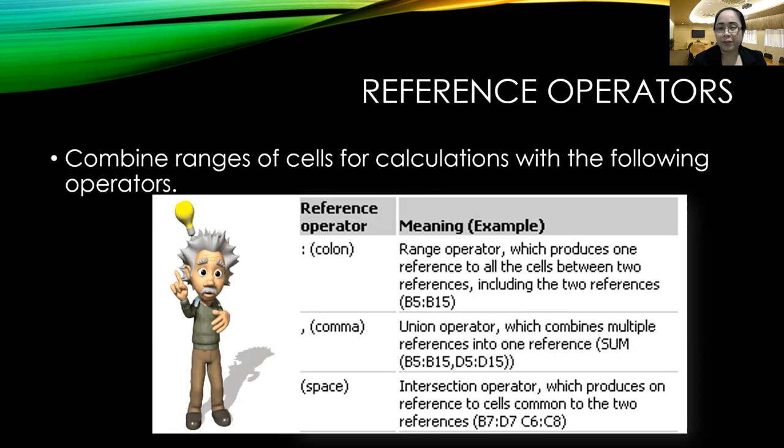The third reference operator is the space operator. Technically, it's called the intersection operator. The intersection operator produces one reference to cells common to the two references.